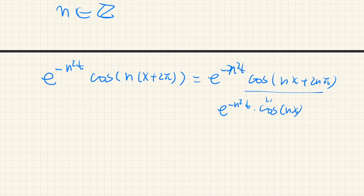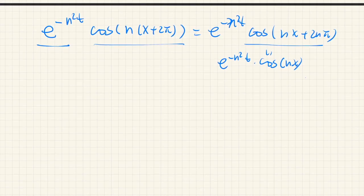So as long as n is integer, actually it can be just positive integers, we have this is a solution. Either sine or cosine times exponential of negative n squared times t is a solution. Therefore, we just combine all of them.